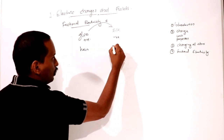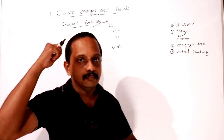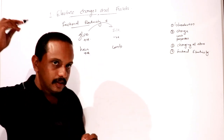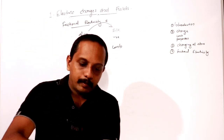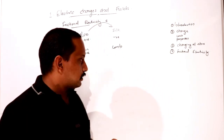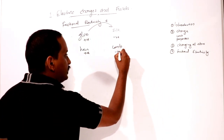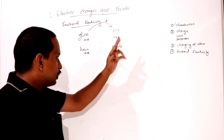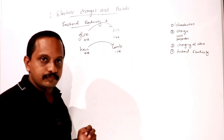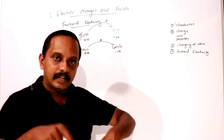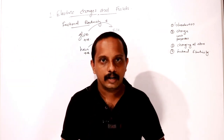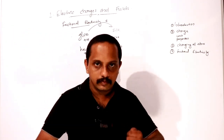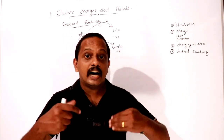Another example: the hair comb. When a comb is rubbed through hair, electrons transfer from the hair to the comb. The hair becomes positively charged and the comb becomes negatively charged.